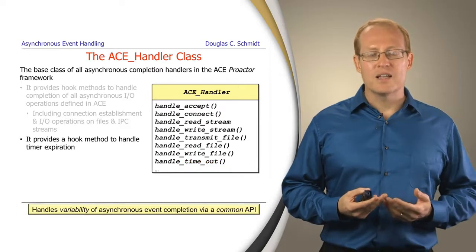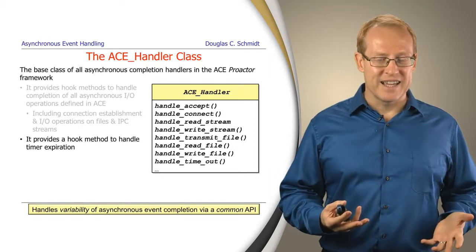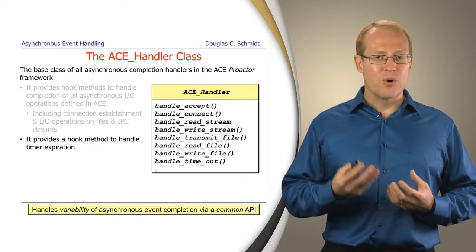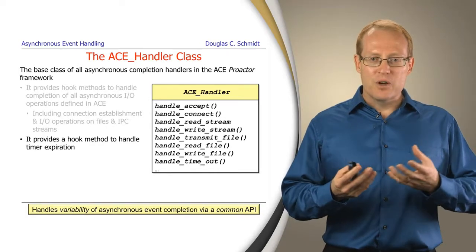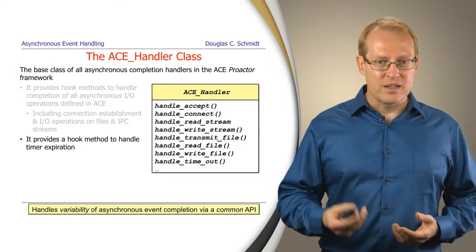This particular class allows us to handle the variability of asynchronous completion handling within a common API. Clearly the read and write streams we saw before and the handlers all go together. They're basically two sides of the same coin, the initiation side and the completion side.